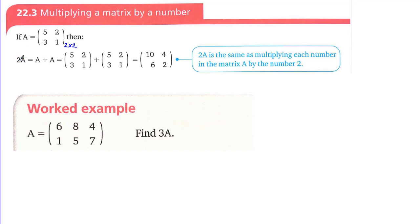We are going to find what 2A is. You know from normal algebraic operations: x plus x equals 2x, or a plus a equals 2a. Similarly, matrix A plus matrix A should be equal to 2A, and this is the proof of it.